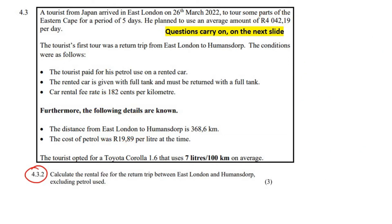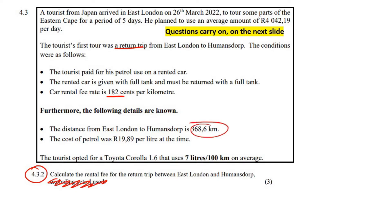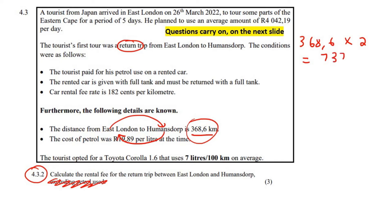The next question says: calculate the rental fee for the return trip between East London and Humansdorp, excluding petrol. The car rental fee rate is 182 cents per kilometer. That is how far he will drive from East London to Humansdorp, but remember it is a return trip, so the guy has to come back — he's going to travel this distance twice. So that's going to be 737.2 kilometers.